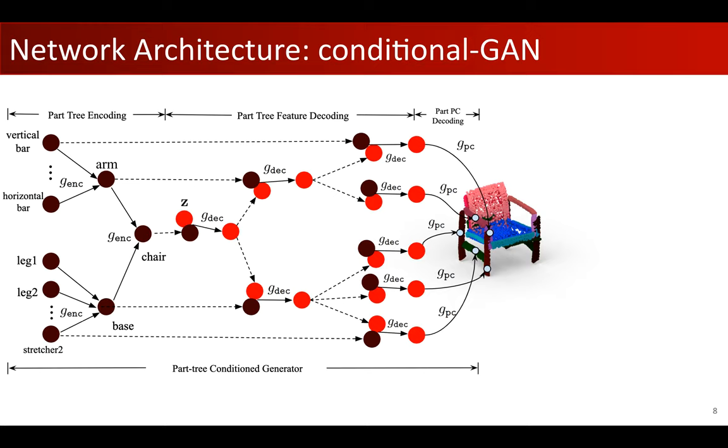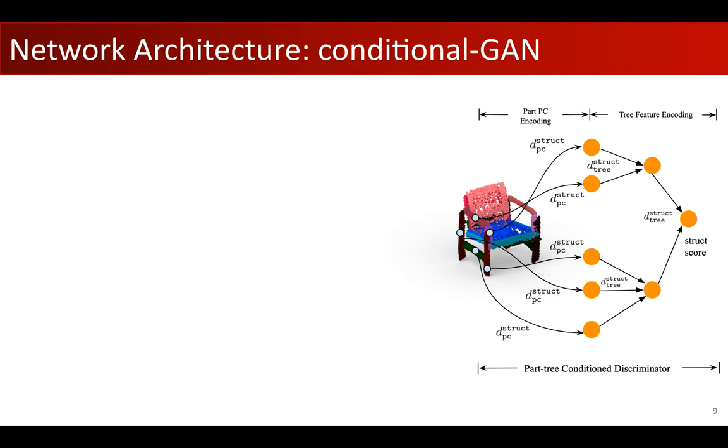For the discriminator, a bottom-up hierarchical encoder is employed to judge the quality of the generated point cloud shapes.